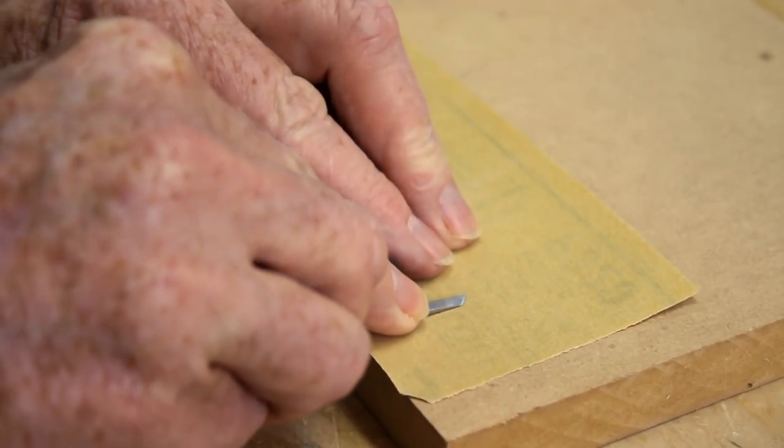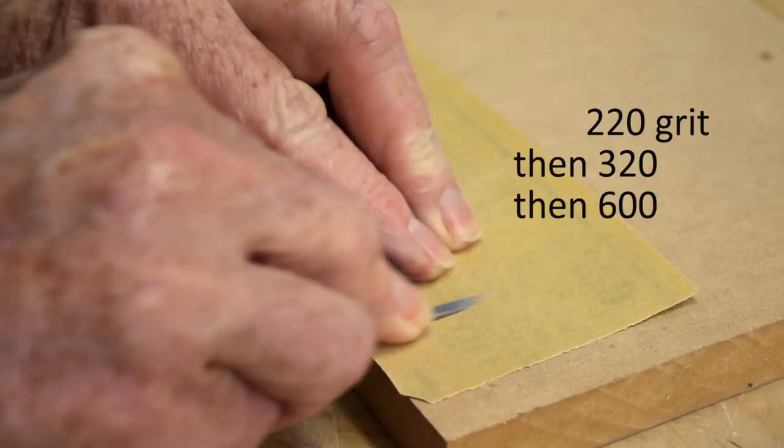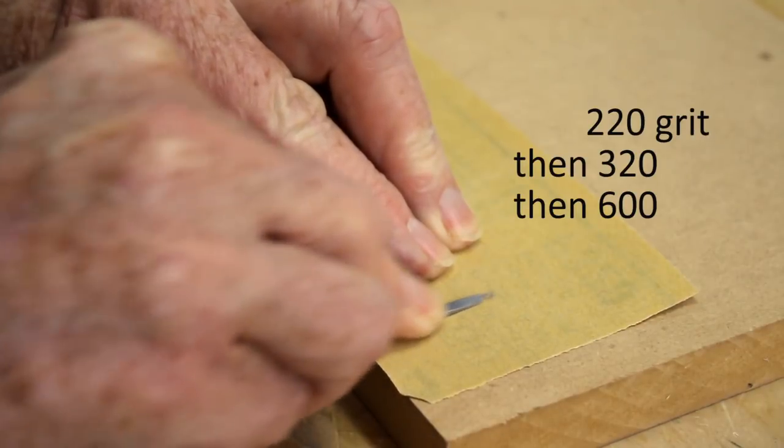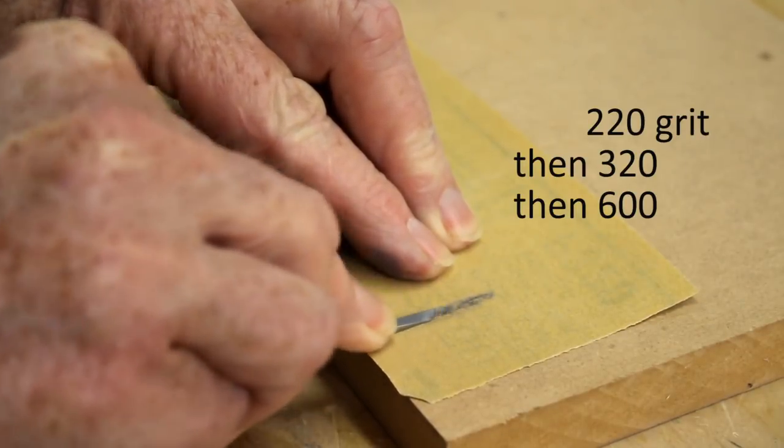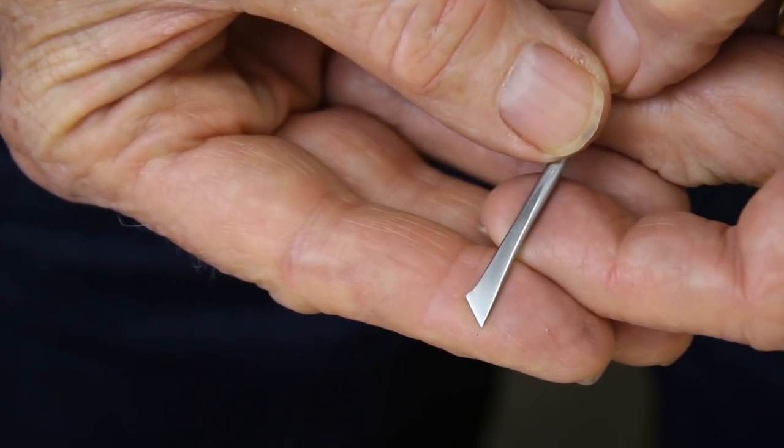Now sand the surfaces exactly as I showed you before, 220, then 320, then 600 grit. It should take only a few minutes. When you finish, your blade should look like this.